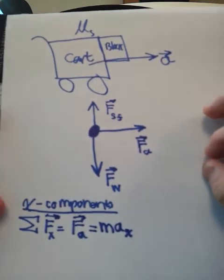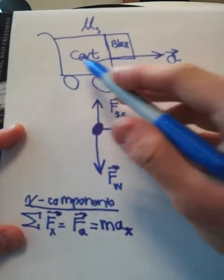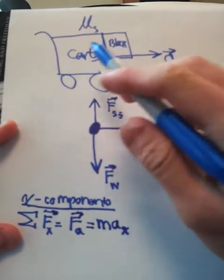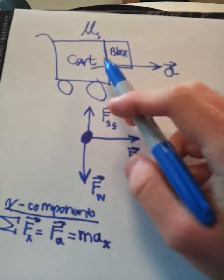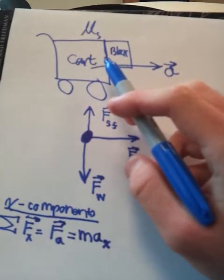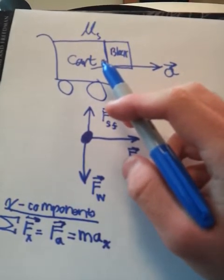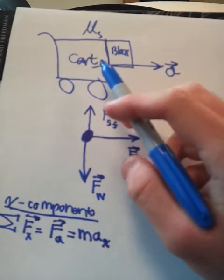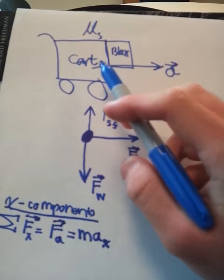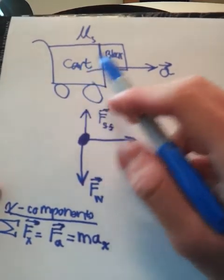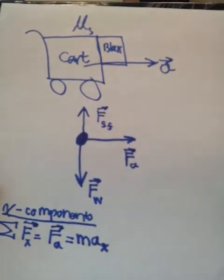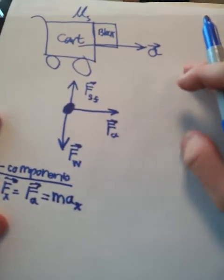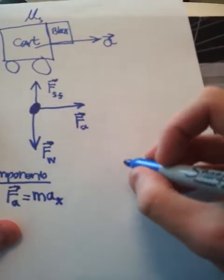Some people might ask: why isn't there a force going the other way due to the block pushing against the cart? Well, you have to ask yourself — is the block really pushing against the cart? Because if it were, it would have an acceleration in that direction, and the only way that could happen is if someone were pushing it in the opposite direction or the block had some sort of rocket — but there's nothing like that.